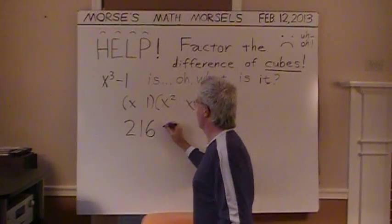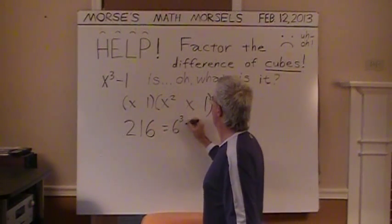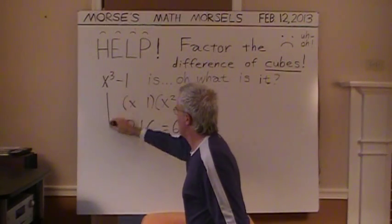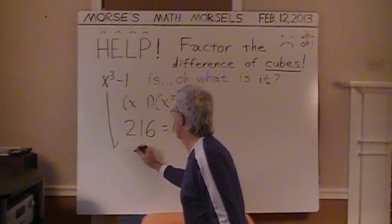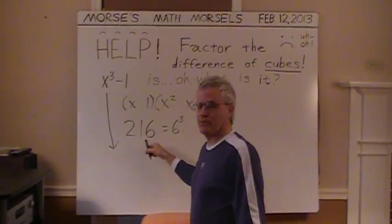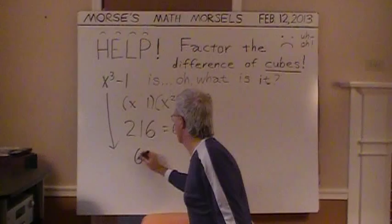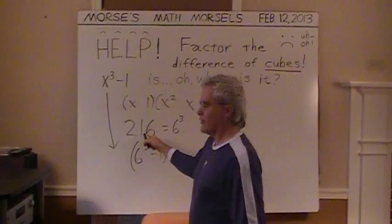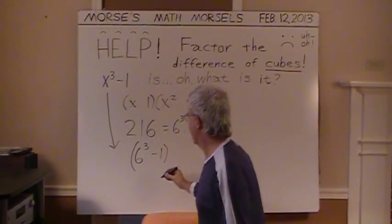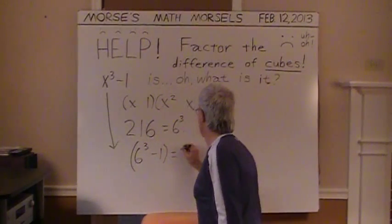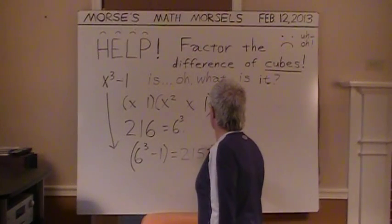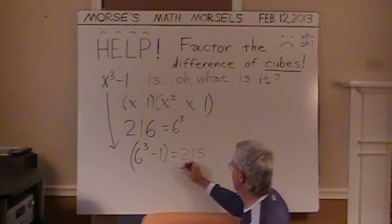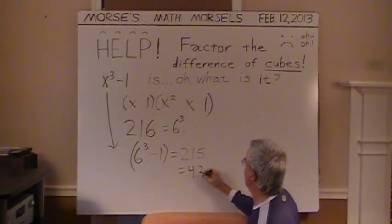Remember that 216 equals 6 cubed. So in place of that horrible x cubed, we're now going to have whatever the positive cube root of 216 is, so that's just 6 cubed minus 1. So 216 minus 1 is all that is, which is 215. And if you divide that by 5 very readily, because it ends in 5, equals 43 times 5.